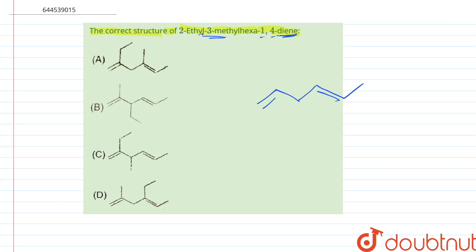So this is how it looks, the parent chain. Then 2 number, that is, this has an ethyl group and 3 has a methyl group. So this is how it looks.